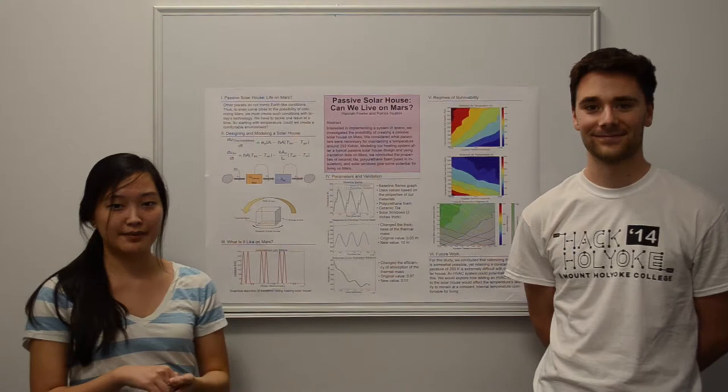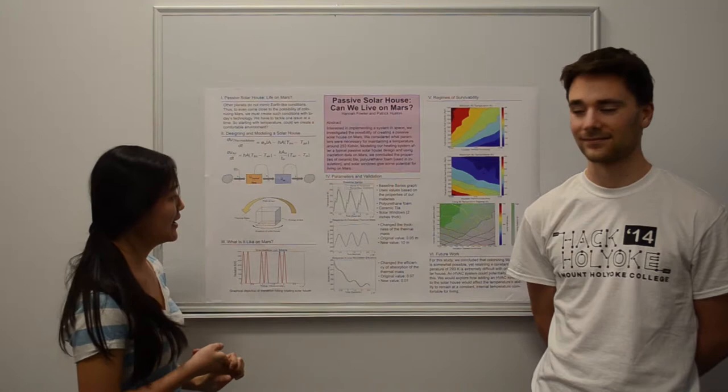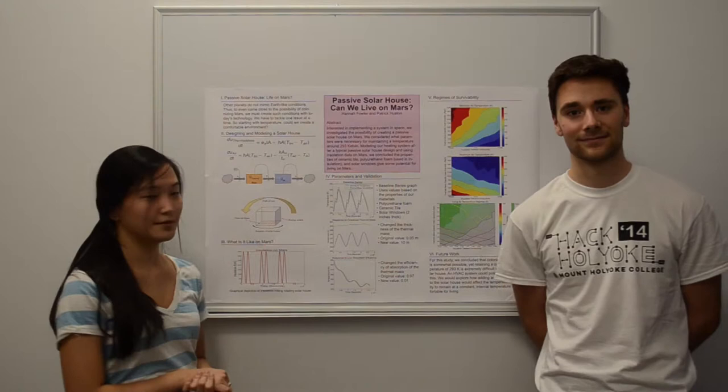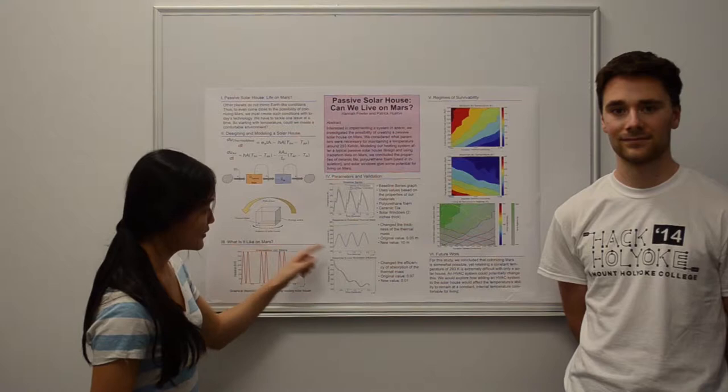So to validate our model we start with a baseline series using parameters given by real-world values of polyurethane foam which is used in insulation, solar windows which are two inches thick, and ceramic tile which has probably some of the most realistic values for temperatures on Mars.